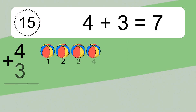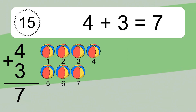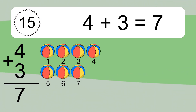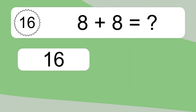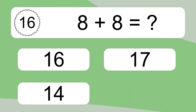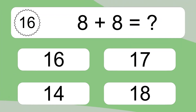4 plus 3 equals what? 4 plus 3 equals 7. Let's count it: 1, 2, 3, 4, 5, 6, 7.